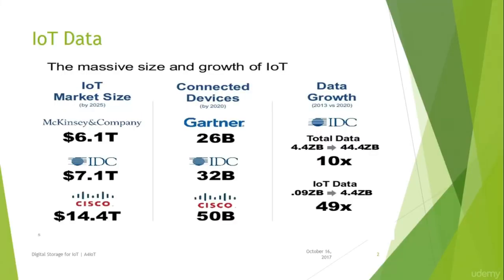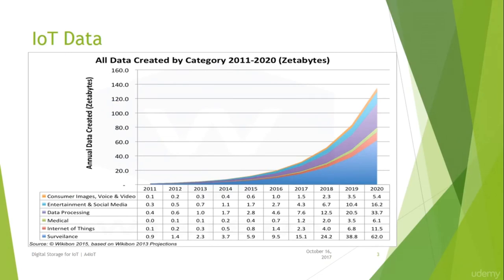IoT has kickstarted the fourth industrial revolution. Market research companies estimate it is a multi-trillion dollar industry, with 30 to 50 billion devices expected to be connected to the Internet by 2020. These connected sensors will generate a massive amount of data — some companies estimate close to four zettabytes, which is 49 times higher than the total recorded data in 2013. This growth is projected across many IoT verticals.